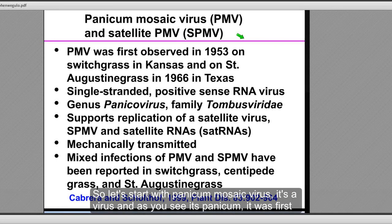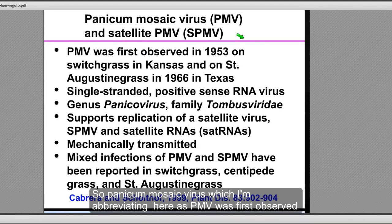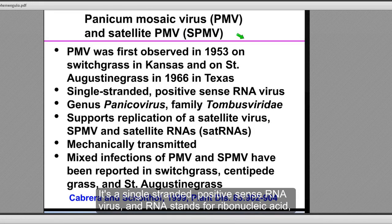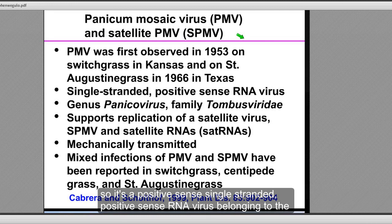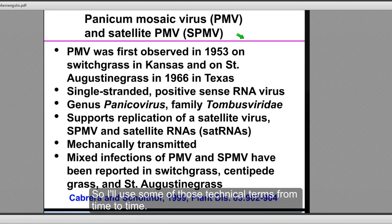Panicum mosaic virus (PMV) was first observed in 1953 on switchgrass — panicum virgatum, the botanical name — in Kansas. In 1966, it was observed on St. Augustine grass in Texas. It's a single-stranded positive sense RNA virus belonging to the genus panicovirus, family Tombusviridae. PMV supports the replication of a satellite virus; the satellite is not capable of replicating by itself and must be helped by the helper virus, panicum mosaic virus.